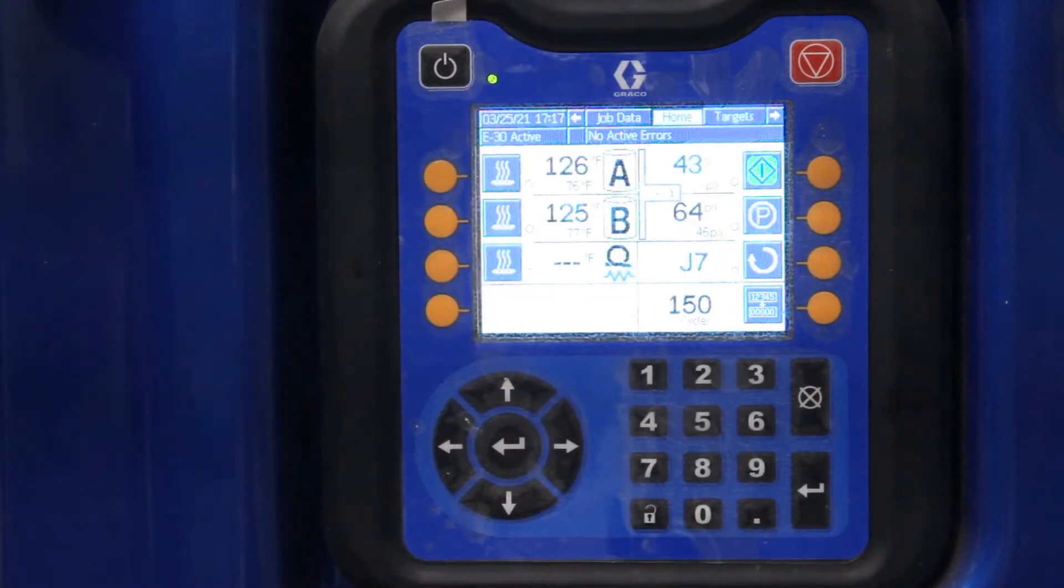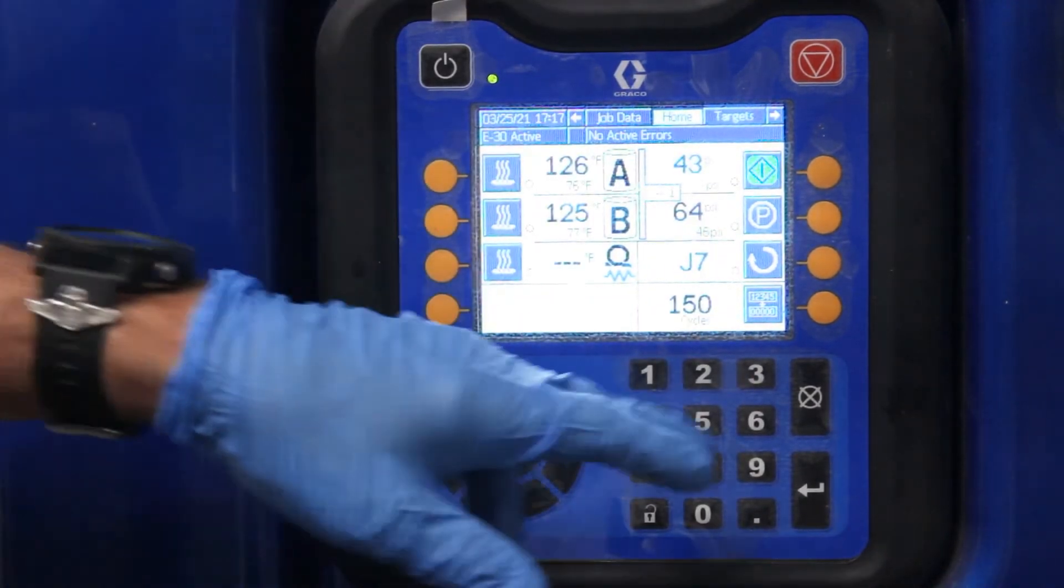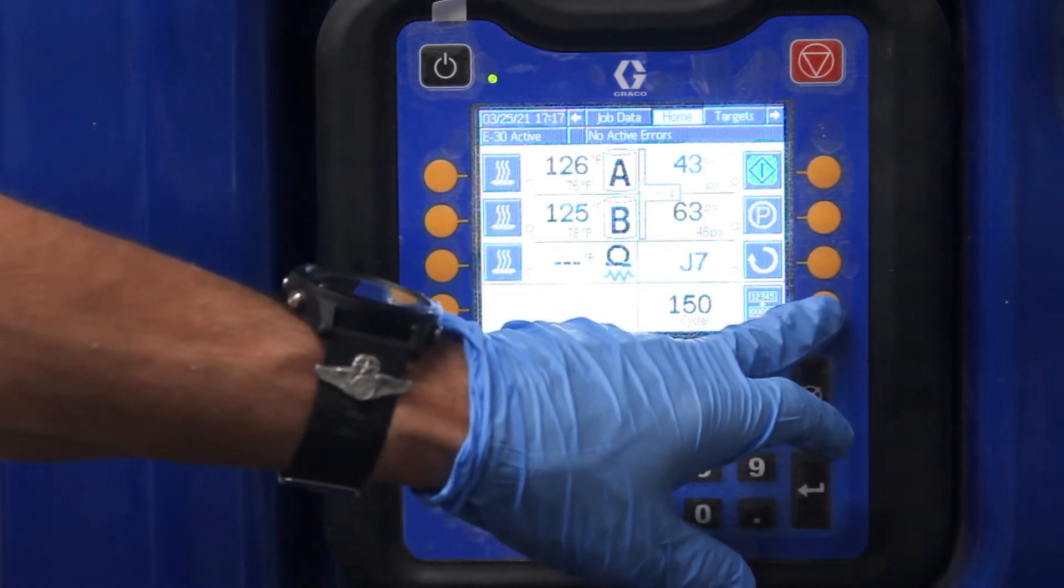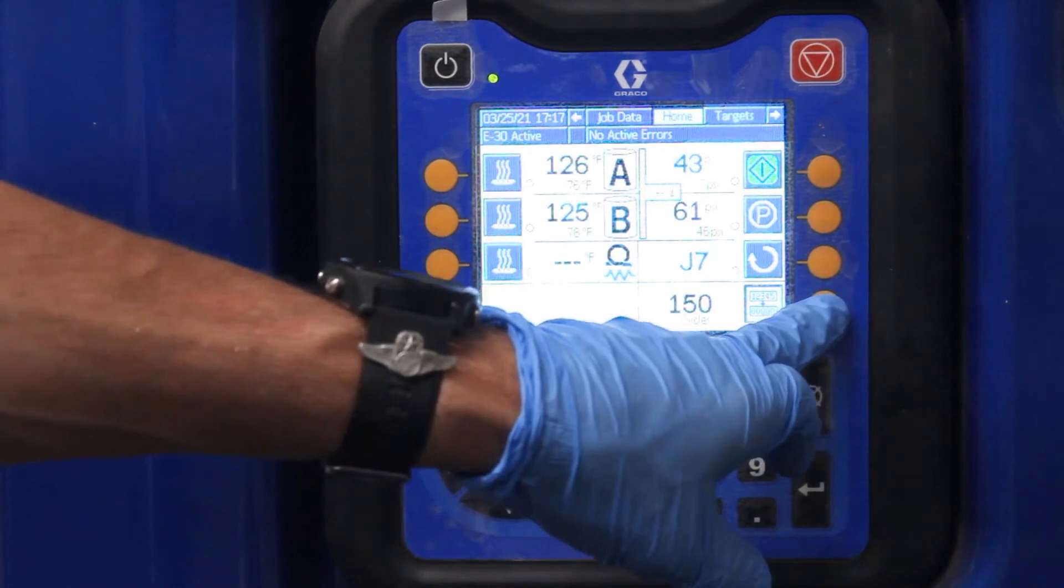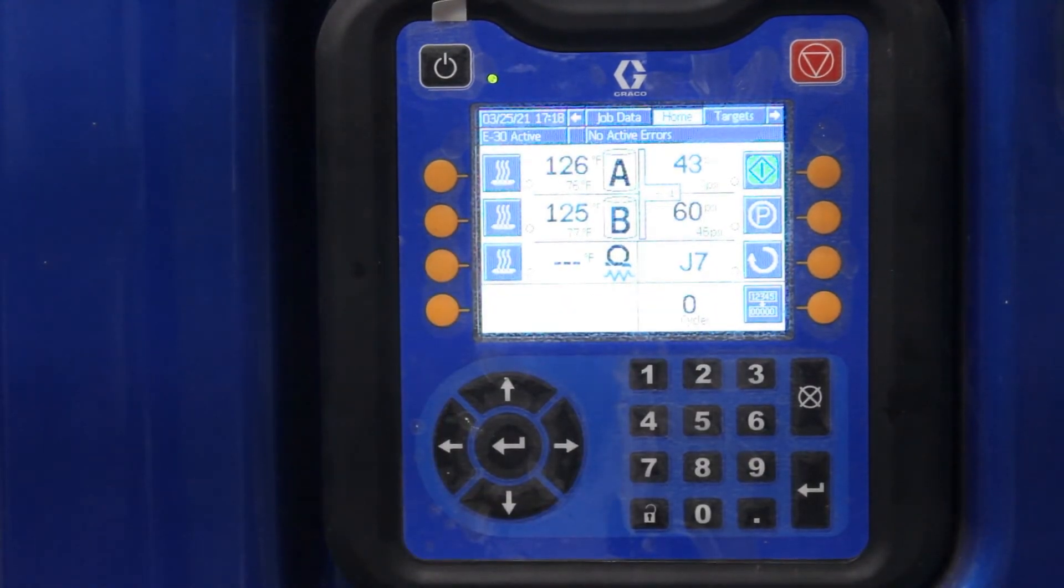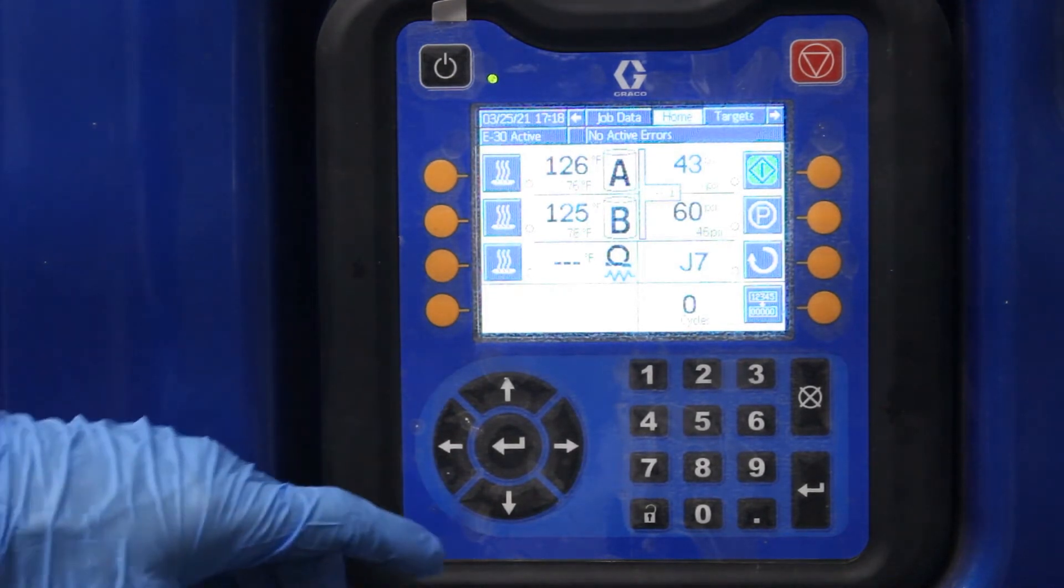When I hit this button, the machine's going to pressurize. This right here is your cycle counter. If you push this in and hold it three seconds, it goes to zero. So that way you can monitor how many strokes you use on a specific job and figure out how much material you used.